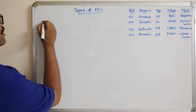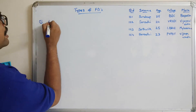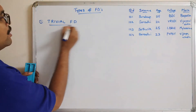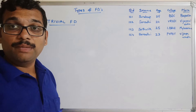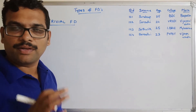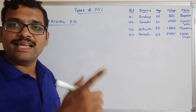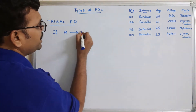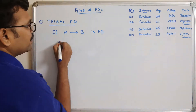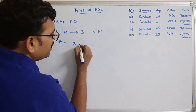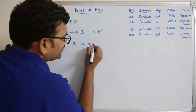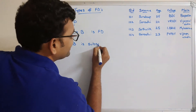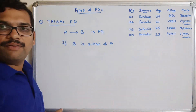The first type is trivial functional dependency. In the previous session, we discussed the reflexivity property of functional dependency — the same concept applies here. If A tends to B is a functional dependency and B is a subset of A, then we call it a trivial functional dependency.